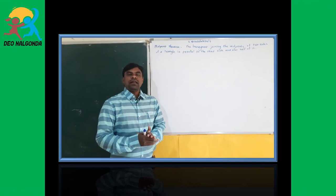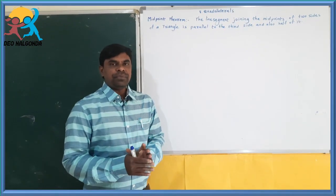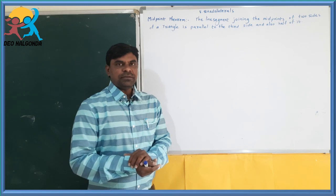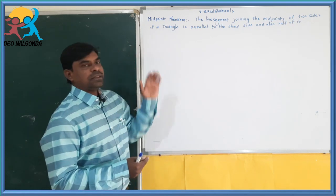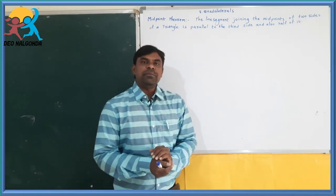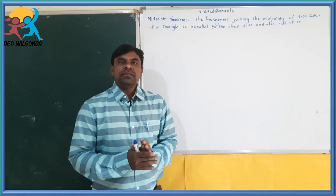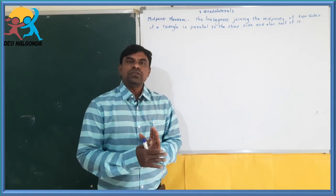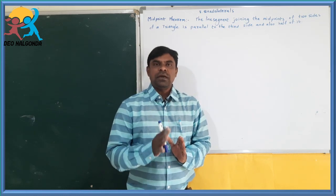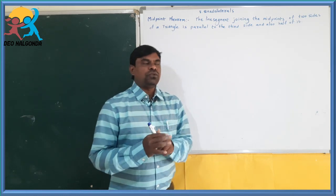Welcome to online classes DGO Nalgonda. Today we will discuss about quadrilaterals. In this, we go through one theorem: the line segment joining the midpoints of two sides in a triangle is parallel to the third side and also half of it. That theorem is called the midpoint theorem. Let us go through it.